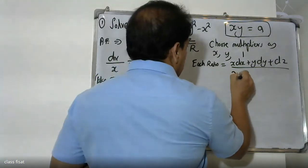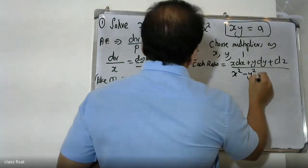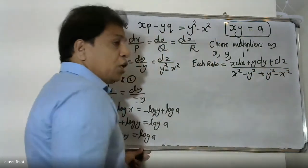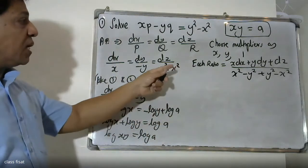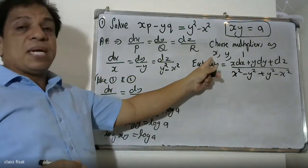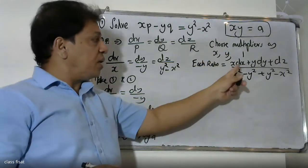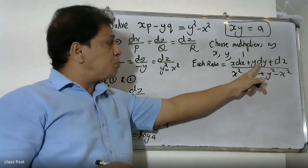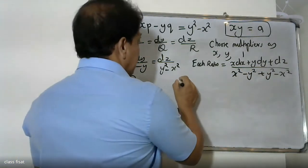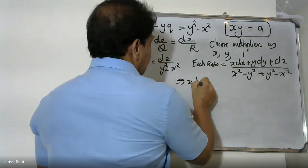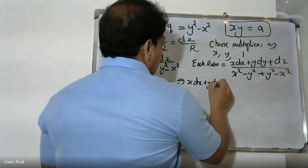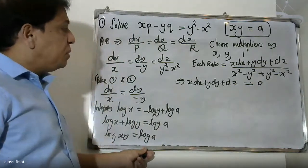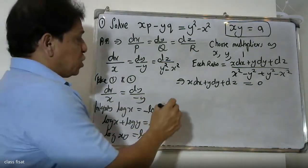Multiplying through: x times x plus y times (−y) plus (y² − x²) simplifies — x squared minus y squared plus y squared minus x squared equals zero. Therefore the numerator becomes zero, and we can write x dx + y dy + dz equals 0.